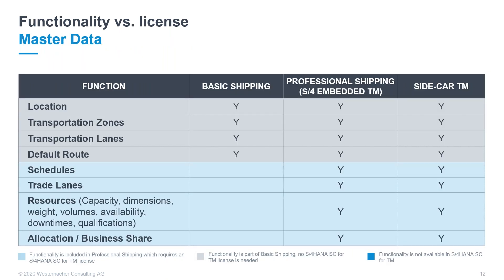Depending on what your business requirements are, you have different functionalities and licenses you can choose. We have basic shipping as one setup or license model in the S4 HANA environment. Furthermore, we have professional shipping with S4 embedded or even decentralized S4 TM, and we have the sidecar TM solution, whose current release is 9.6. The key message here is that on your way to your TM implementation, be it 9.6 or S4, the question of which functionalities you need for your processes must be taken into account in order to derive which licenses are then required.